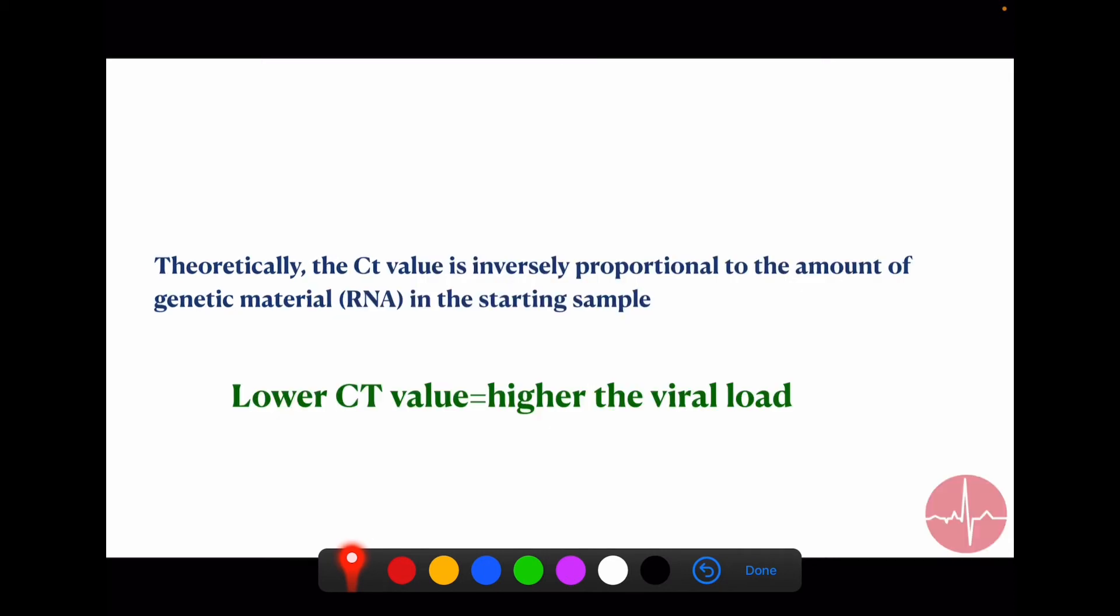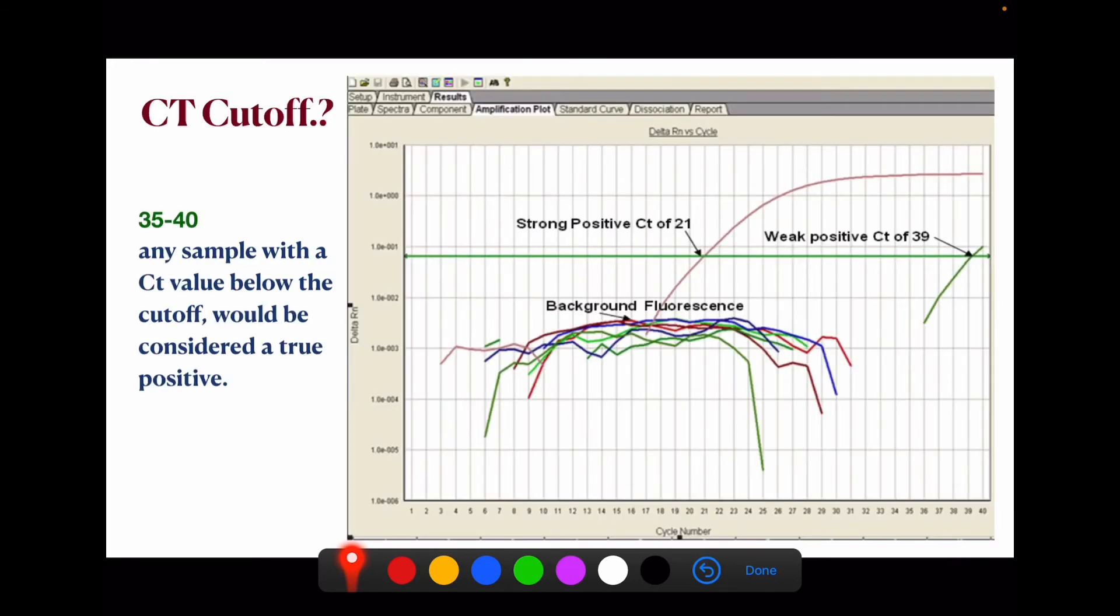So the conclusion is: lower CT value, higher viral load; higher CT value, lower viral load. And how many cycles we repeat is called the CT cutoff. Generally we check up to 35 to 40 cycles, and any sample with a CT value below the cutoff would be considered a true positive value.